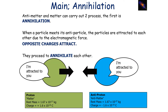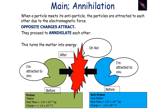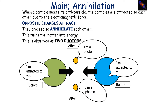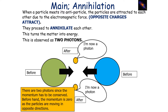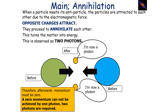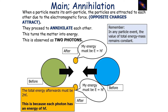Annihilation occurs when a particle meets its antiparticle. They are attracted to each other due to the electromagnetic force — because opposite charges attract — and proceed to annihilate. The matter turns into energy, observed as two photons. Two photons are produced because momentum must be conserved. Beforehand, the momentum is zero because the particle and antiparticle move in opposite directions and cancel each other's momentum out. Afterwards, we need zero momentum, and this cannot be achieved by one photon, so two photons are required.